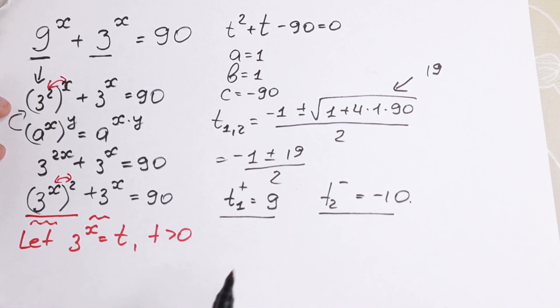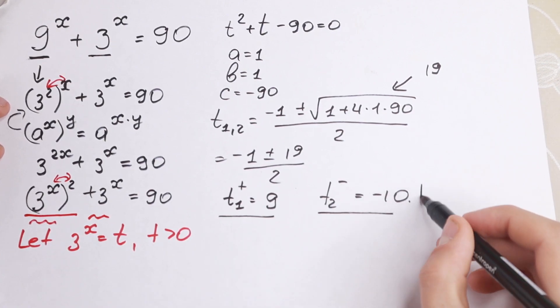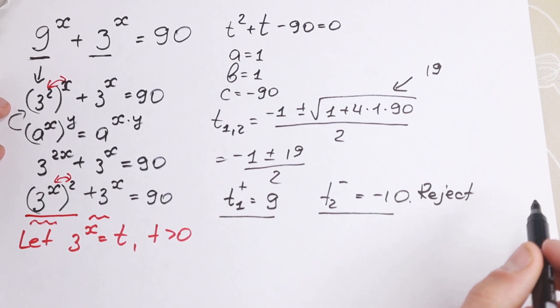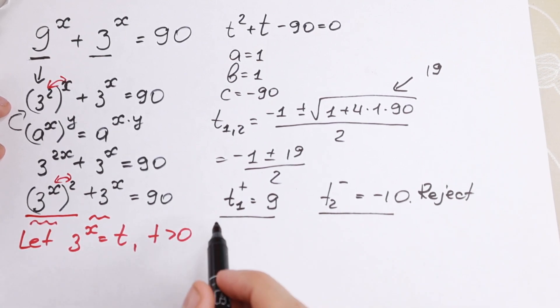But we had a substitution that t is greater than 0. In our case t is negative, so we reject this negative root.